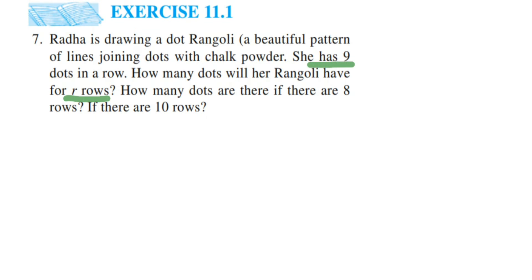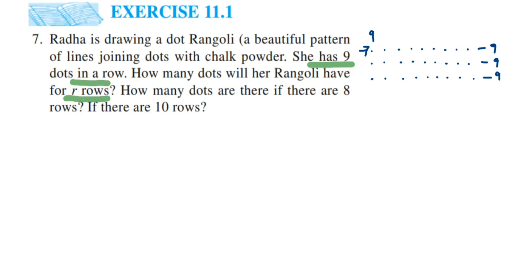If there are R rows and each row has nine dots, let's think it through. In one row there are nine dots. In a second row, again nine dots, so nine plus nine equals eighteen. In a third row, nine plus nine plus nine equals 27. So row one means nine, row two means nine into two which is eighteen.